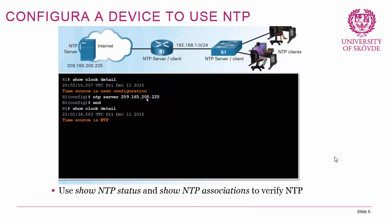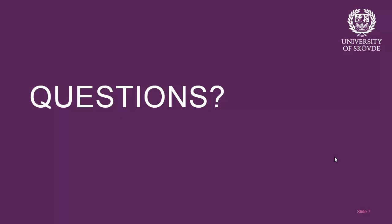To configure a device to use NTP, go into configuration terminal and do 'ntp server' followed by the IP address of an NTP server. The command 'show clock detail' shows the clock and time source for a router. The clock is not set by default. If set locally with 'clock set', output shows 'time source: user configuration'; if set via NTP, it shows 'time source: NTP'. Use 'show ntp status' and 'show ntp associations' to verify NTP.